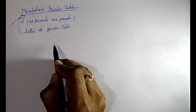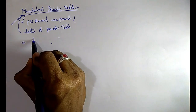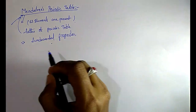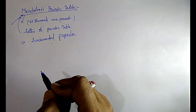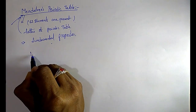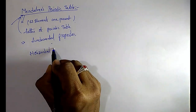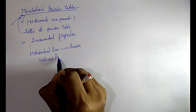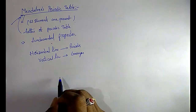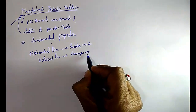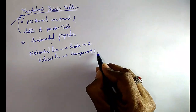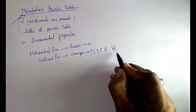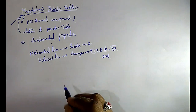He arranged all the elements on the basis of their fundamental property — increasing order of atomic masses. In his periodic table, the horizontal lines are called periods and the vertical lines are called groups. He divided the table into seven periods and nine groups — groups one through eight and a zeroth group.